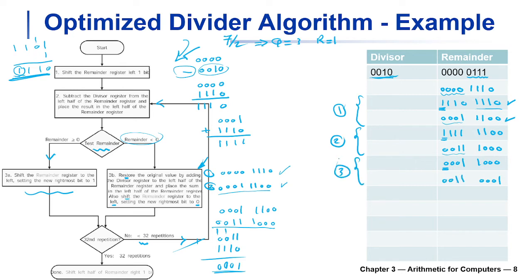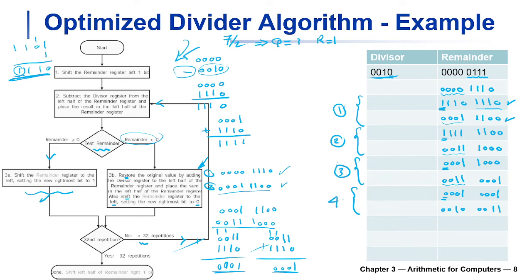Iteration three done — still not four, so we go back. We subtract the divisor from the left half of the remainder: 0011 plus 1110 (two's complement of divisor). 1+0=1, 1+1=0 carry 1, 1+1+1=1 carry 1 — that's the new left half. The remainder is positive, so we shift left and set the rightmost bit to 1. This gives us 11 in that position. That's the fourth and final iteration.